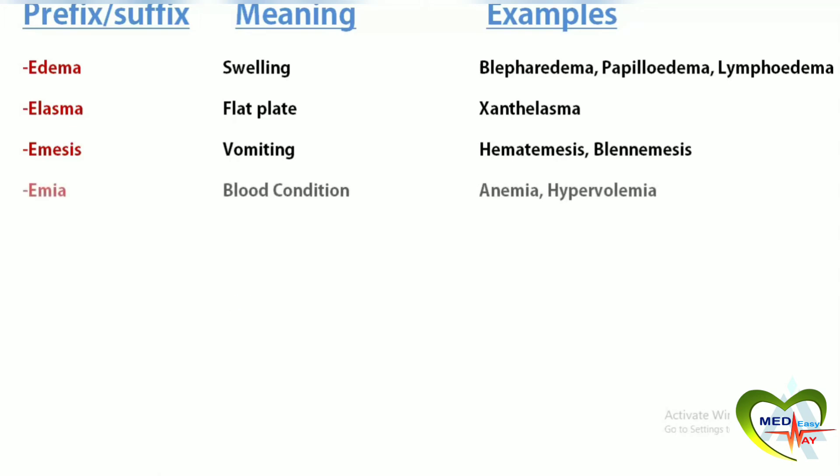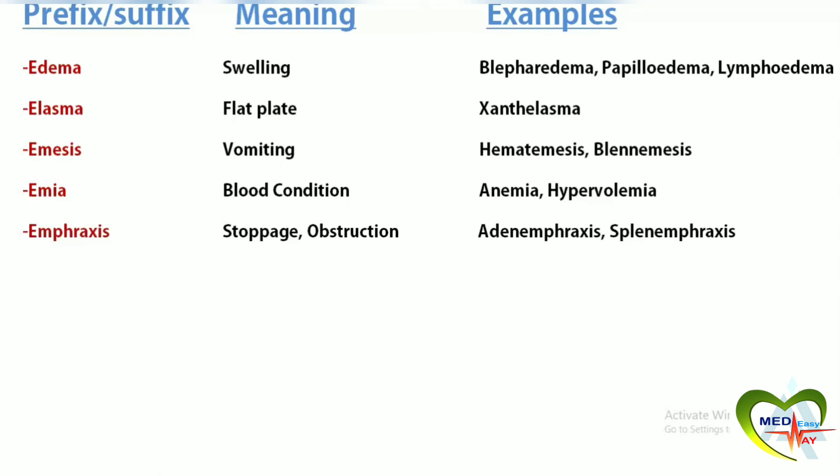Emia means blood conditions. Anemia is a lack of hemoglobin in the blood. Hypervolemia is an increase of the liquid portion in blood. Emphraxis means stoppage or obstruction. Splenemphraxis means obstruction of splenic congestion. Adenemphraxis is obstruction of the discharge of a glandular situation.